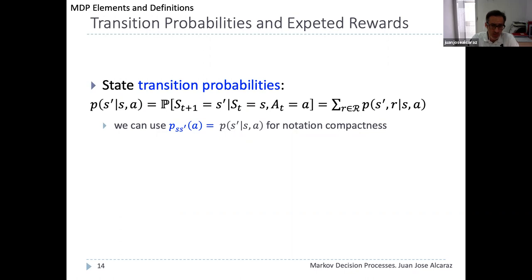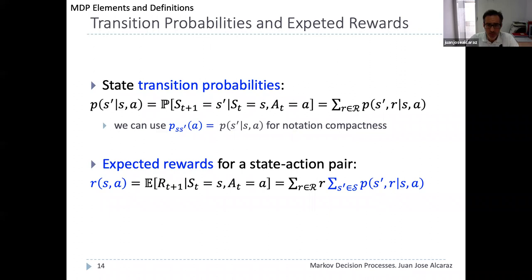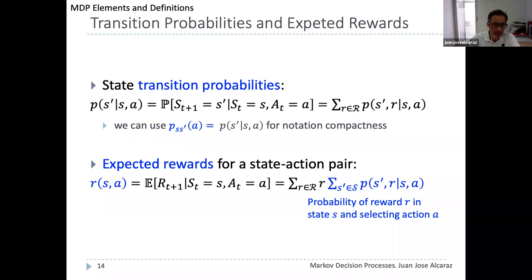The transition probabilities between states are defined as the probability of next state s' given the current state-action pair, computed by summing the joint distribution of s' and r over all values of r. The expected reward or reward function r(s,a) for a given state-action pair is the expected value of r_{t+1} conditioned on the current state-action pair, computed using the marginal probability for each reward value obtained by summing the joint distribution p over all values of s'.